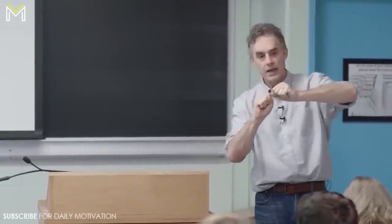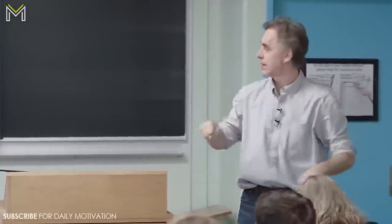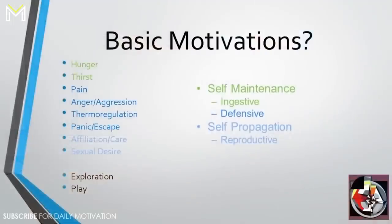You can say there's a set of motivations that go along with self-maintenance — that would be your survival. There's an ingestive set: hunger and thirst. There's a set of defensive motivations: pain, anger, thermal regulation, panic, and escape. And then there's motivations associated with reproduction: affiliation, care, and sexual desire.